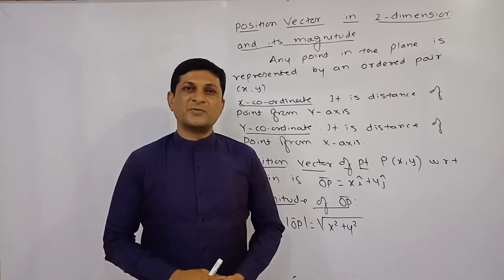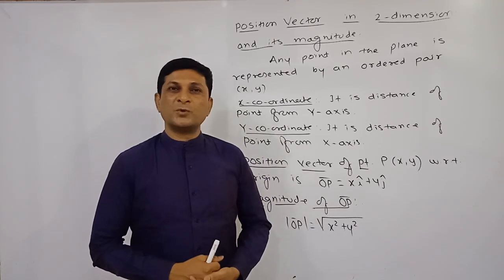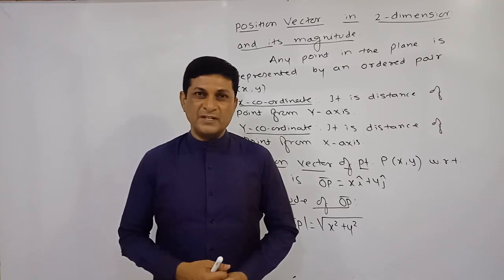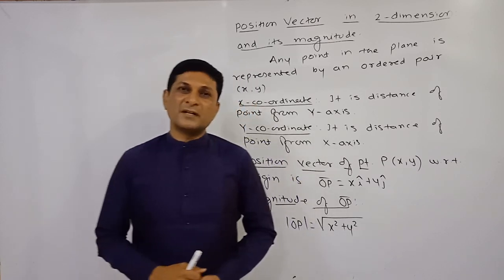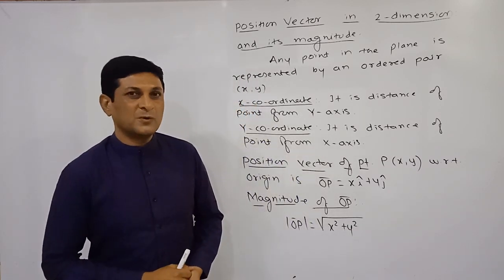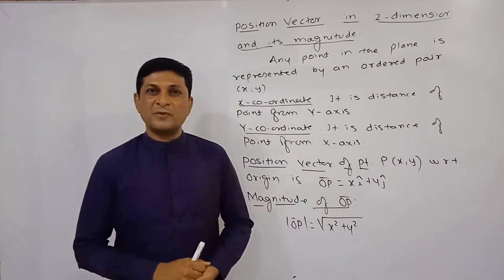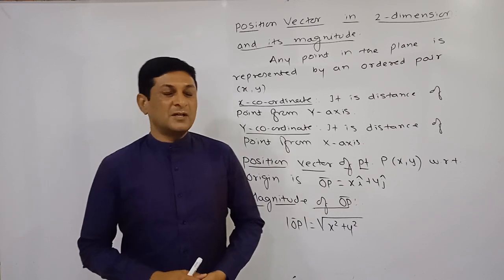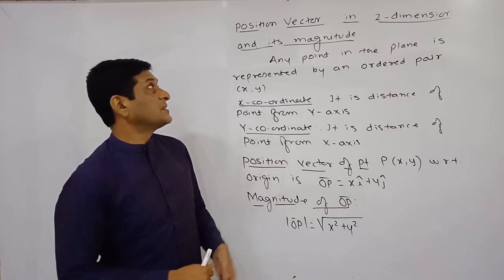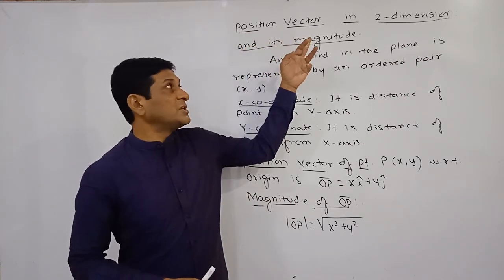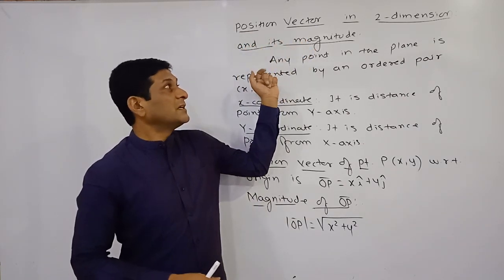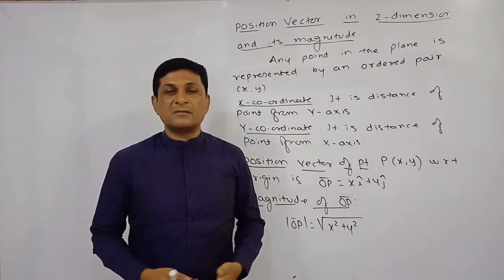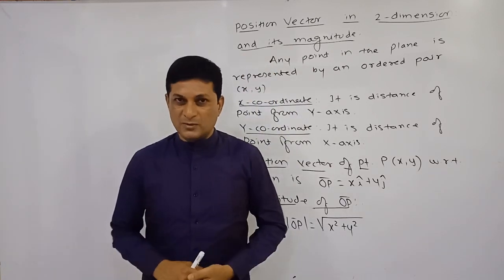Hello friends. In the last video we proved some theorems of linear combination. We saw the conditions for collinearity of two vectors and coplanarity of three vectors. Now we are finding the value of a position vector in two-dimensional geometry and its magnitude also.